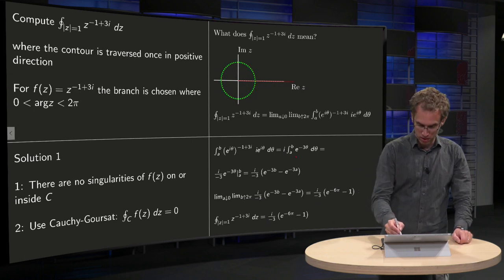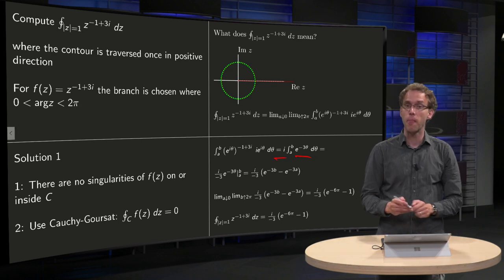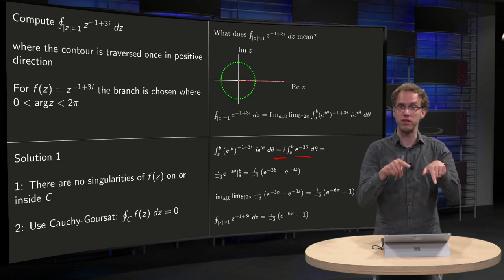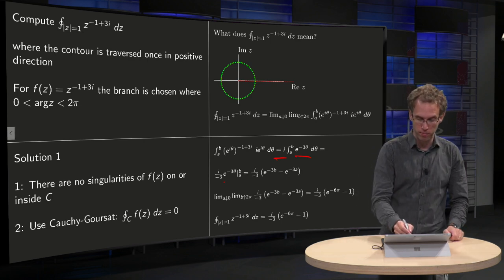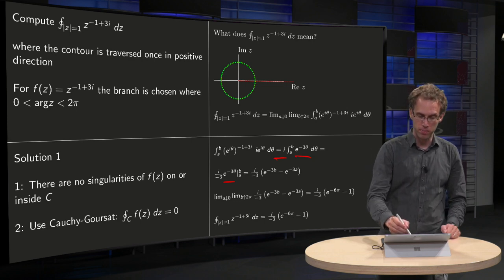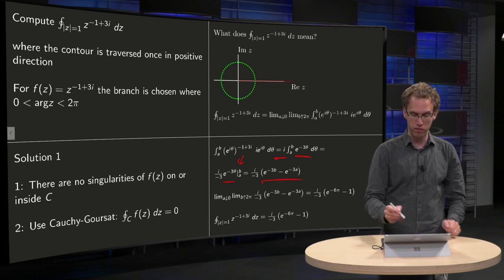So this will be our integral. The factor of i you can just take in front of course. You can compute the antiderivative, you get i divided by minus 3 times e to the power minus 3 times θ between the boundaries. Then you plug in boundaries, upper boundary minus lower boundary, and there you are over here.